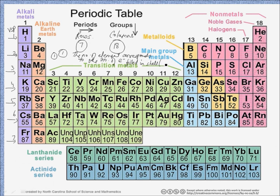The maximum number of electrons filled in each shell follows the sequence: 2, 8, 18, 32. The second and third periods each have 8 elements, so we call them short periods. The fourth and fifth periods each have 18 elements, so we call them long periods. The sixth period has 32 elements, making it a very long period. The seventh period contains the remaining elements and is considered an incomplete period.